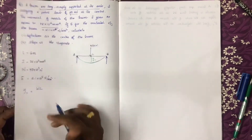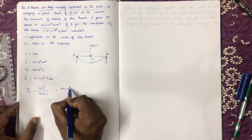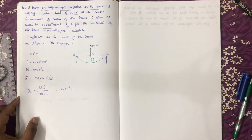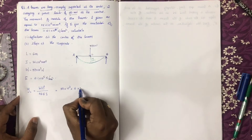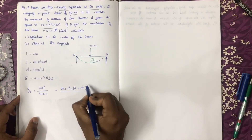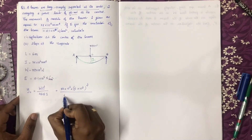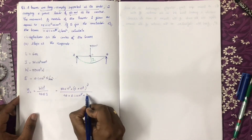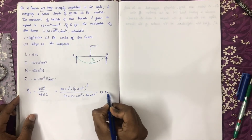The deflection formula is WL³ divided by 48EI. Substituting W = 50 × 10³, L = 6 m (converted to mm as 6 × 10³), E = 2.1 × 10⁵, and I = 78 × 10⁶ mm⁴, we get a deflection of 13.736 mm.